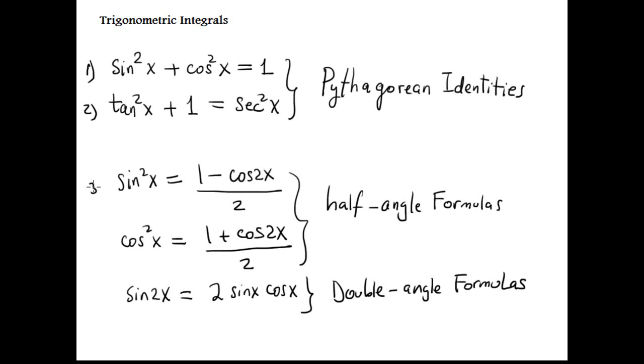Number three and number four are half-angle formulas for sine and cosine. And number five is double-angle formula. There are more formulas and you can see them here. However, these are the most important that we are using in this topic.